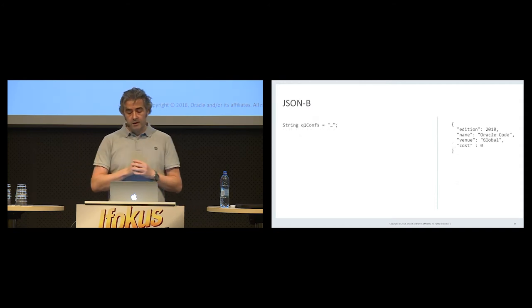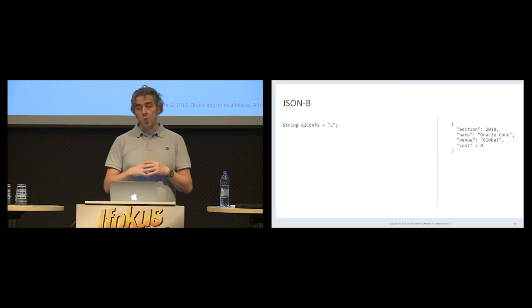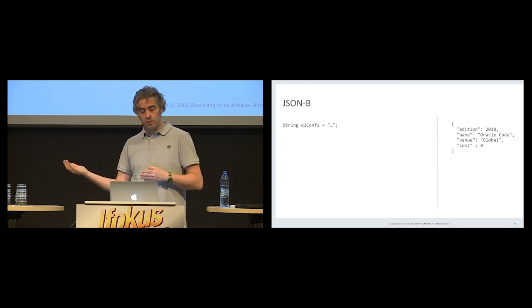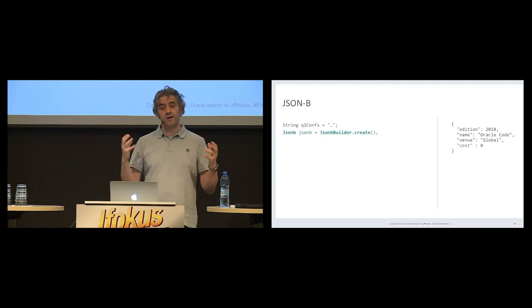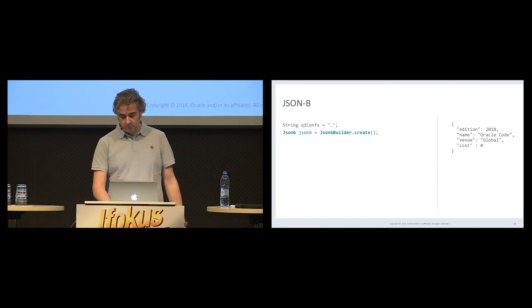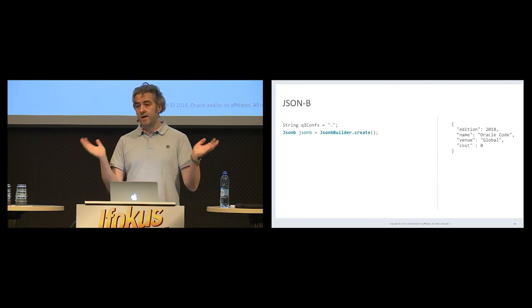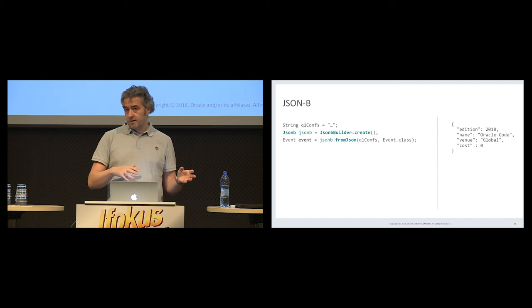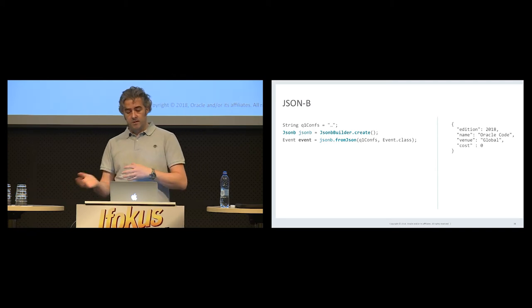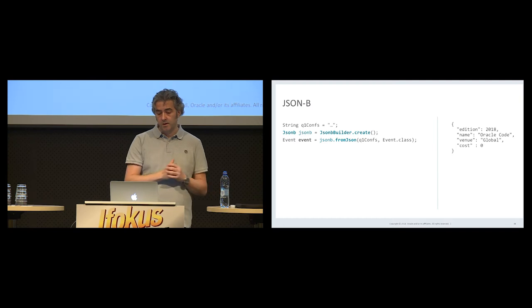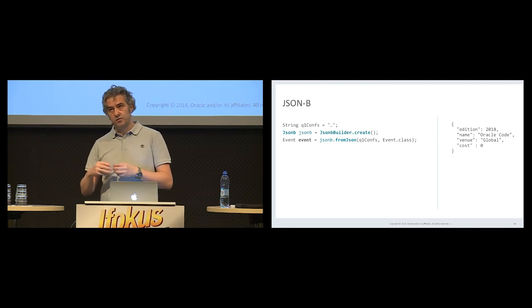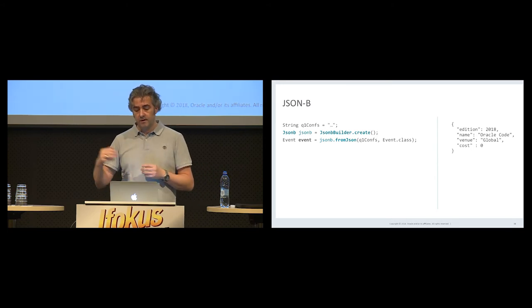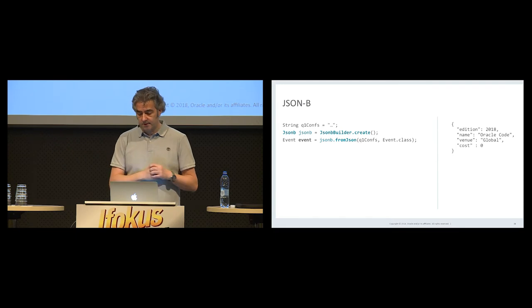Obviously it works the other way around. We have a string with a given JSON payload and we want to convert it to a Java object. We get an instance of a JSONB object via JsonbBuilder.create() with no configuration for default behavior. Then instead of toJson, we use the fromJson method — pass it the JSON payload and also pass it the type we want to cast to — and we get a Java object containing all the information from the JSON document.